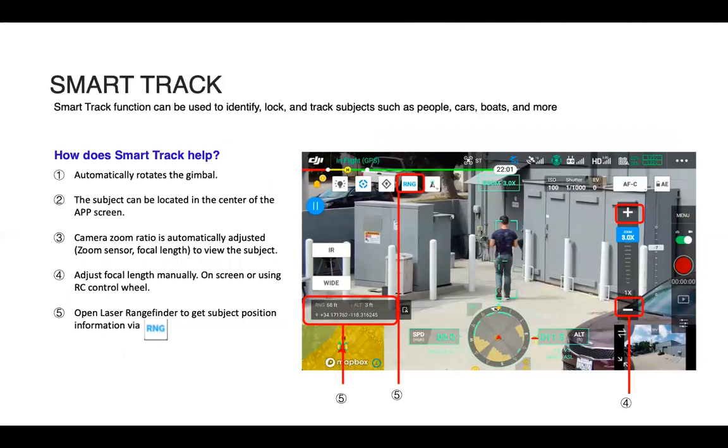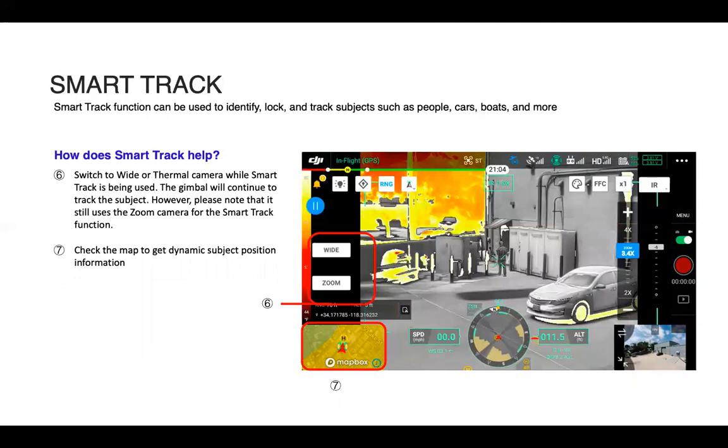So just kind of reviewing how SmartTrack can be helpful. One, it's automatically rotating the gimbal. Two, the subject is going to be located in center of the app screen without having to do any work. The camera zoom ratio is automatically adjusted to view the subject. You're able to adjust focal length manually on screen or using the RC control wheel if you'd like the view to be a little more zoomed in or zoomed out. You can open laser rangefinder to get subject position via the RNG button or look at the map. You can switch to the wide or thermal camera while SmartTrack is being used. Just need to realize that the zoom camera is what's doing the tracking.